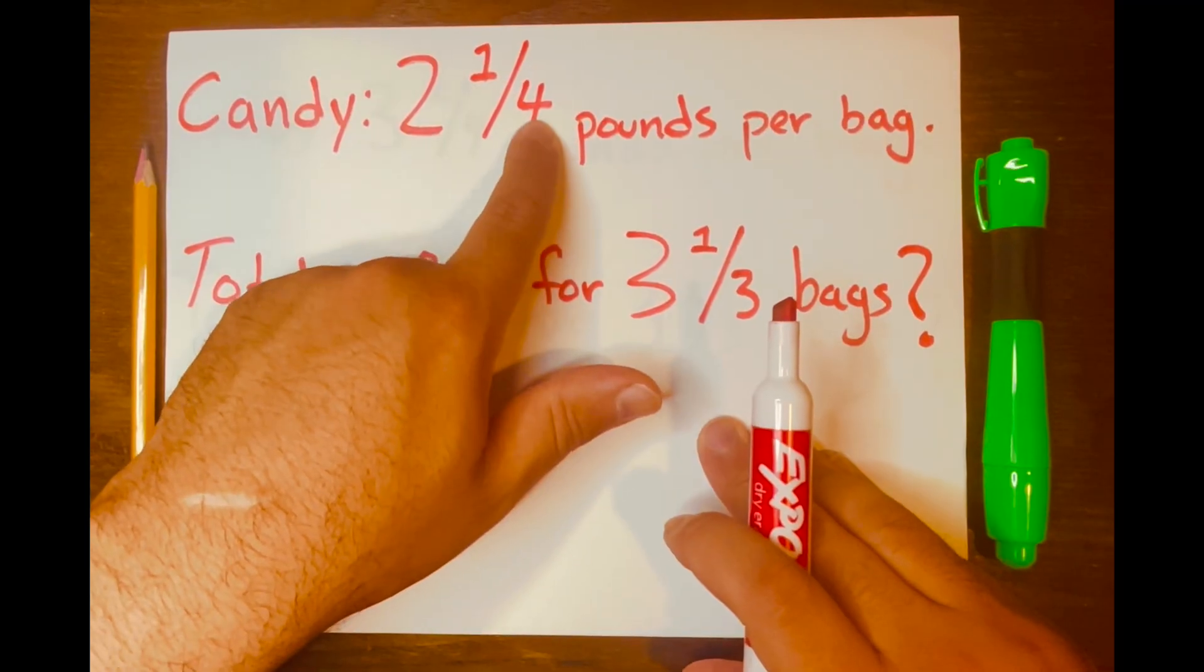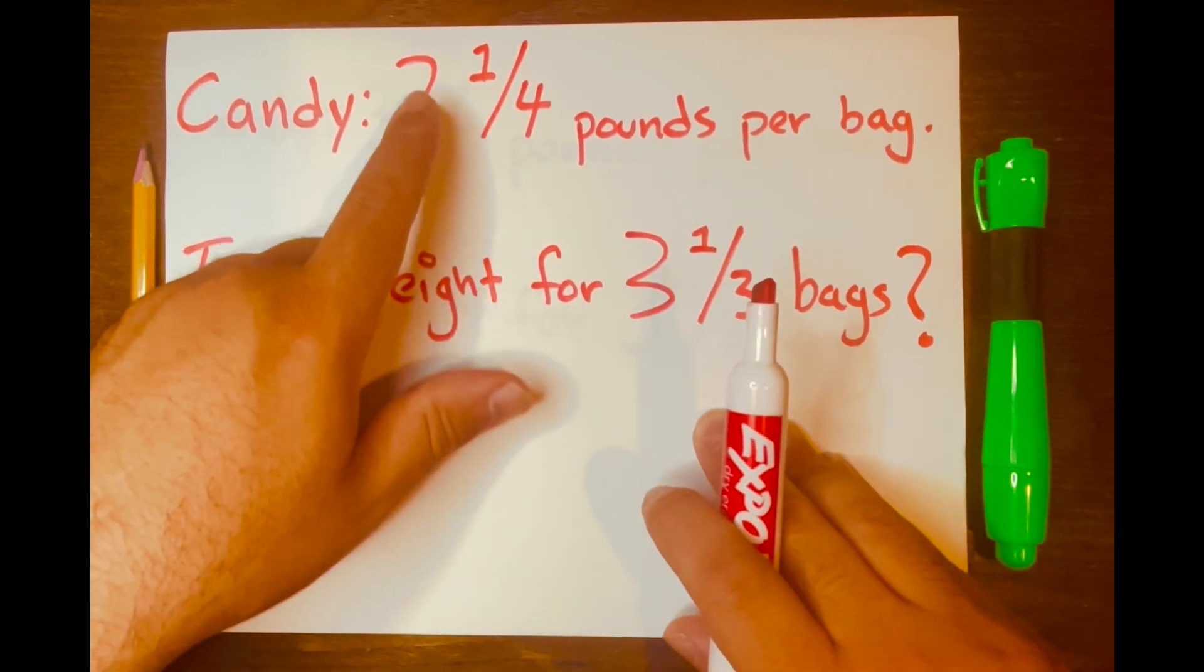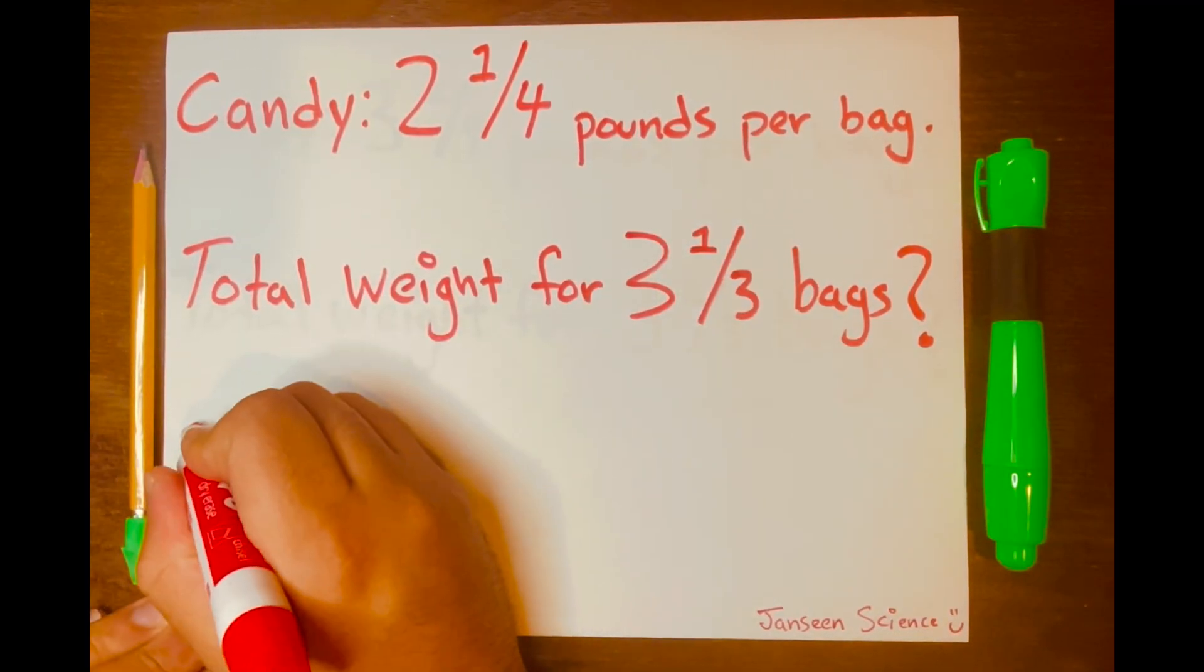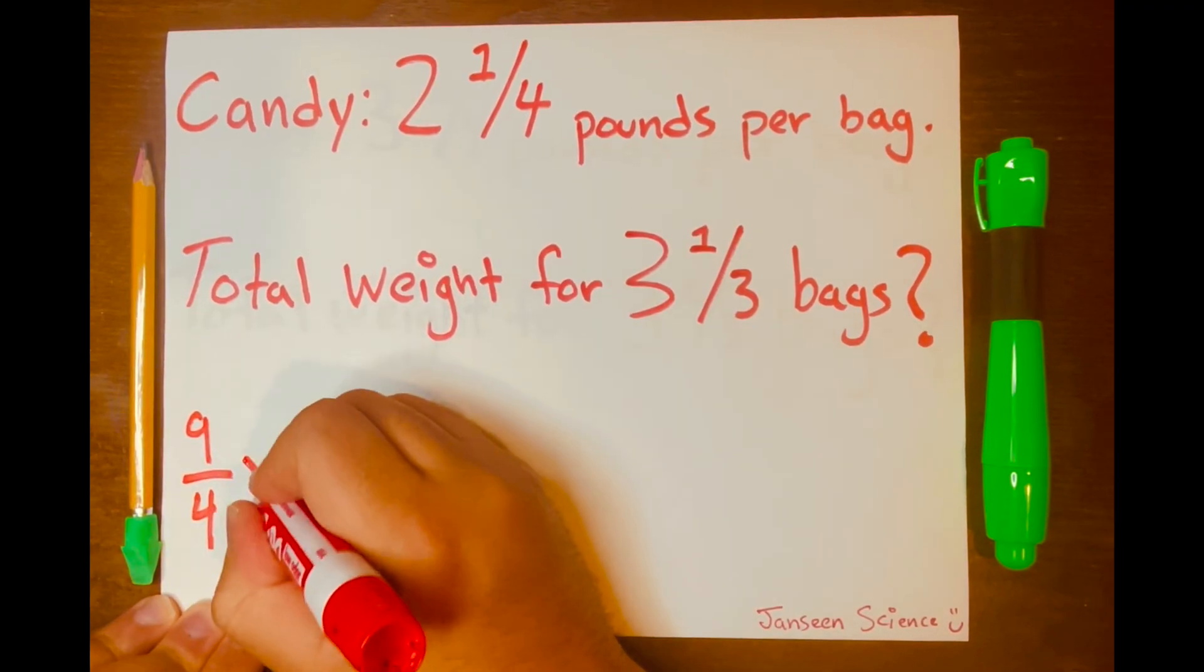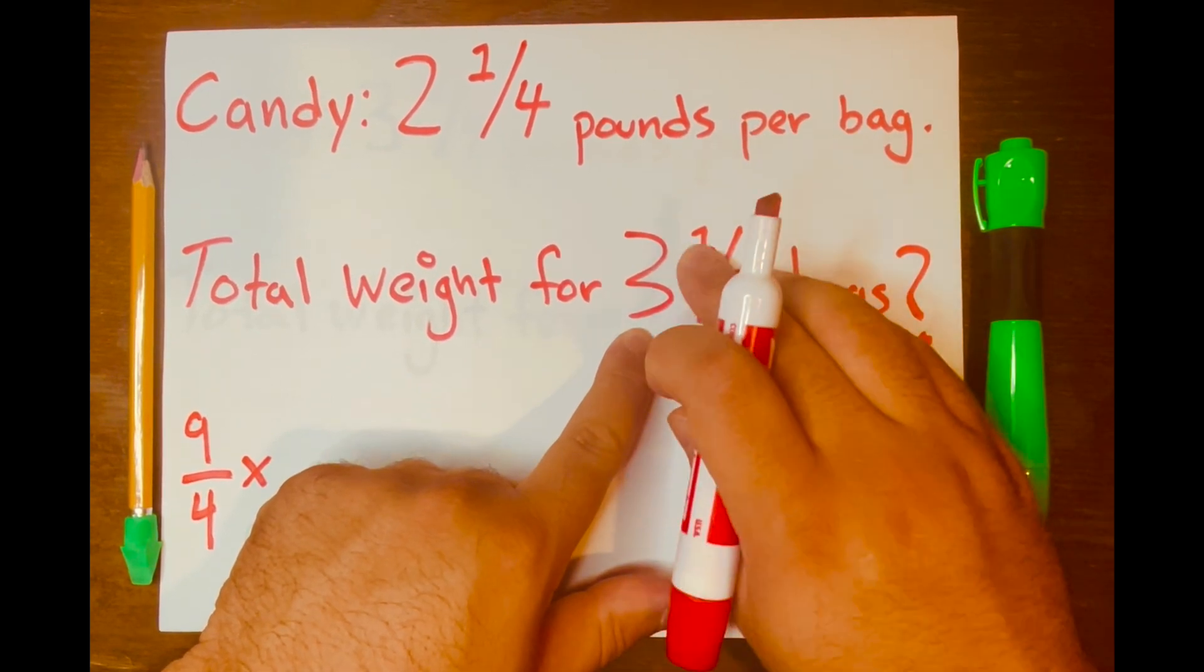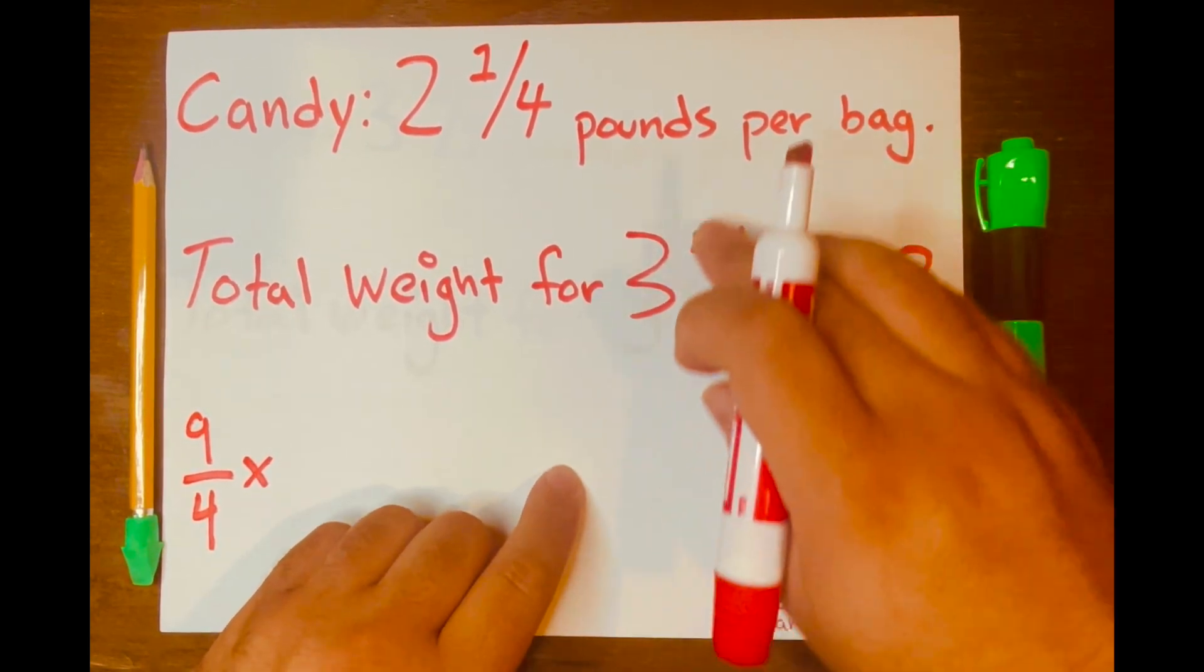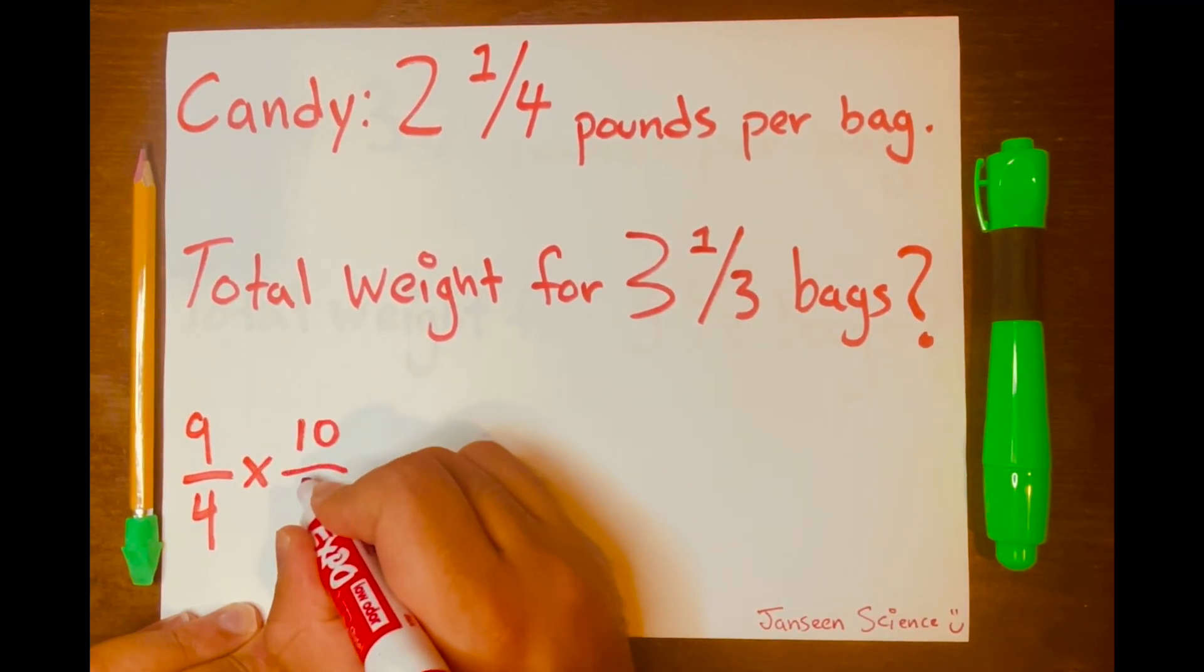So four times two is eight plus one is nine. So we'll write nine over four, and we're multiplying. And three times three is nine, plus one is 10. So we'll have 10 over three.